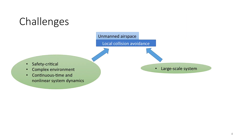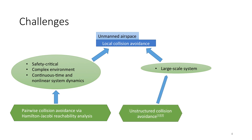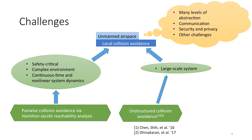We can break the multi-vehicle collision avoidance problem down into many two-vehicle categories with reachability. For small systems such as systems with two vehicles, we can directly use Hamilton-Jacobi reachability to guarantee safety for pairwise collision avoidance. However, for a number of vehicles greater than two, we have to consider other methods. Prior works were able to guarantee safety for three and four vehicles respectively for unstructured collision avoidance.